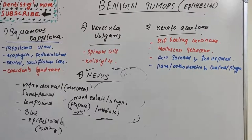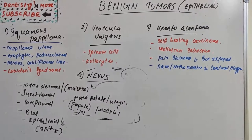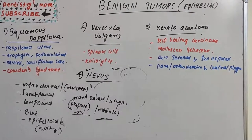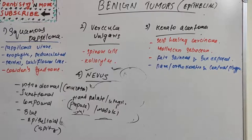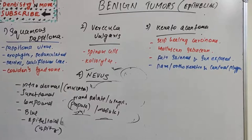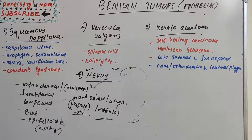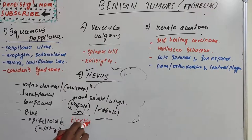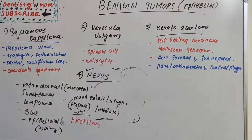Histopathologically, intramucosal nevus is characterized by nests, cords, or sheets of nevus cells confined to the connective tissue. The cells may be epithelioid, lymphocyte-like, spindle, or multinucleated types. The most striking feature is a fibrous connective tissue zone separating the nevus from the overlying epithelium. As a general rule, all solitary pigmented papules or nodules of the oral cavity should be excised, and once excised, recurrence is very rare.